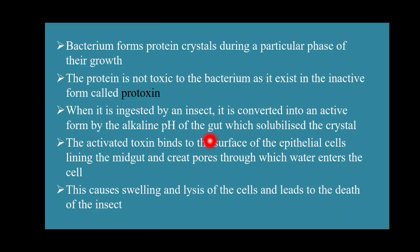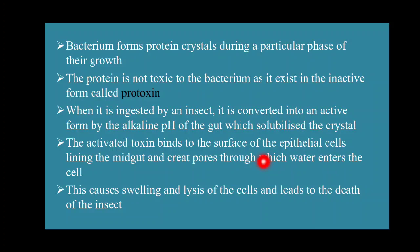The activated toxin binds to the surface of the epithelial cell lining of the mid gut and creates pores through which water enters the cell. Because of these pores, water enters into the cell, causing swelling. The cell becomes turgid, swelling of the cell occurs, and when more water enters the cell, breakdown of the cell membrane takes place — that is cell lysis. So the cell dies. This causes swelling and lysis of the cell and leads to the death of the insect.